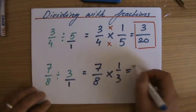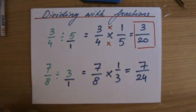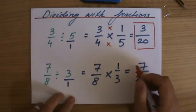and that equals 7 over 24. And again, that cannot be further simplified.